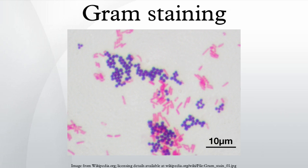In cultures of Bacillus, Butyrivibrio, and Clostridium, a decrease in peptidoglycan thickness during growth coincides with an increase in the number of cells that stain Gram negative. In addition, in all bacteria stained using the Gram stain, the age of the culture may influence the results of the stain.